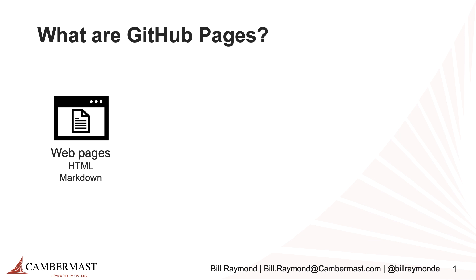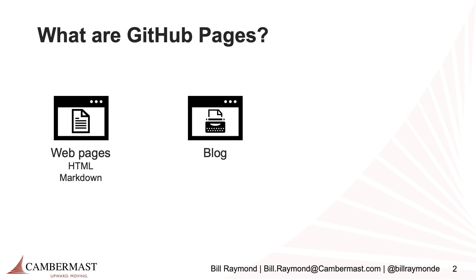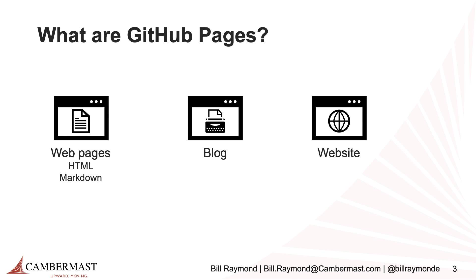So what are GitHub Pages? They are free hosted static pages that you can put up on GitHub. They can be a web page that just announces or introduces your product, they could be a blog, or it could be a full-blown website. It's all up to you, and when I say free, I mean free. If you sign up for a GitHub account, you can have any number of repos with any number of web pages on them.